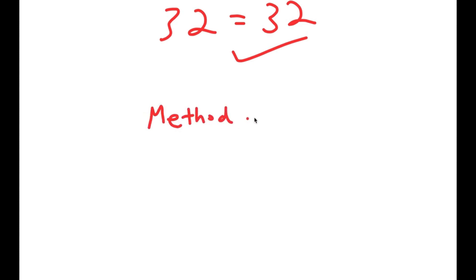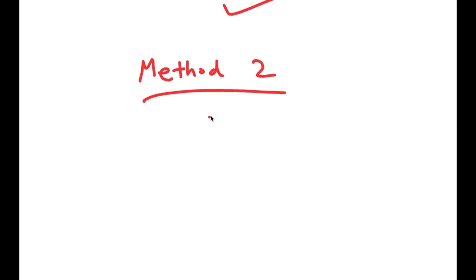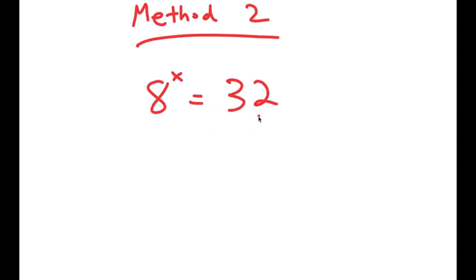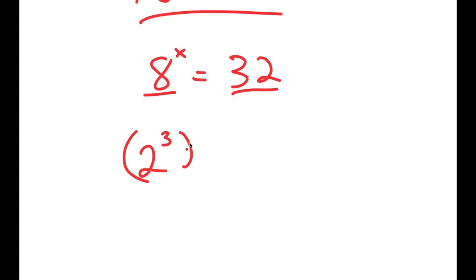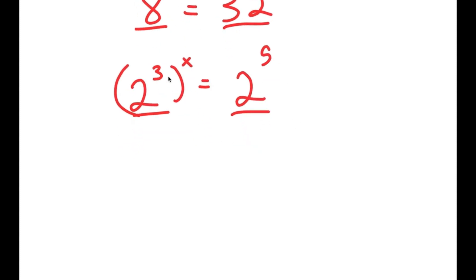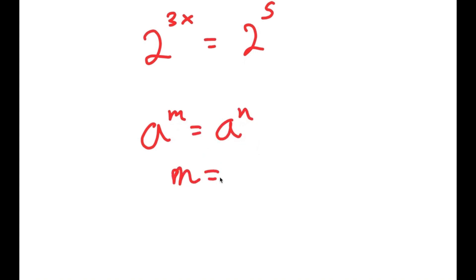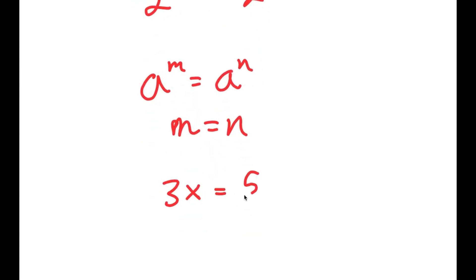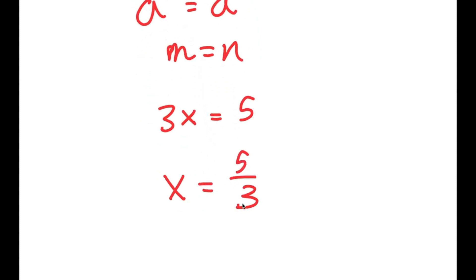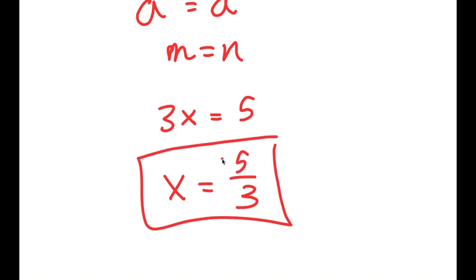I also have a second method of solving this problem. We have the same equation, 8 to the power of x is equal to 32, and this is a simpler method. I'm going to rewrite 8 as 2 to the power of 3, and 32 as 2 to the power of 5 — both with the same base. So 2 to the power of 3 to the power of x equals 2 to the power of 3x, which equals 2 to the power of 5. Because the bases are the same, 3x equals 5, so x equals 5 over 3.